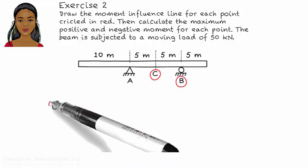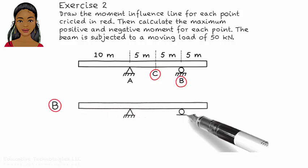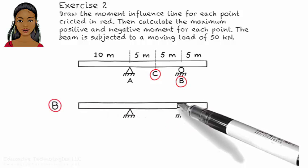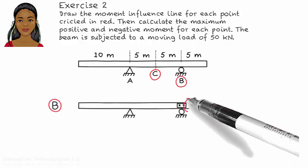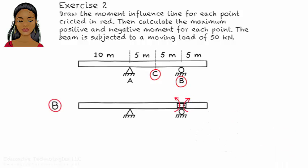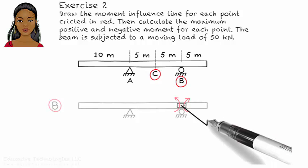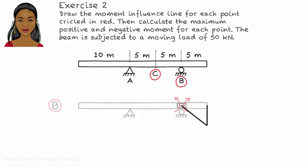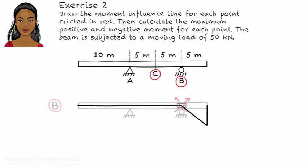Drawing the influence line for point B. Place a hinge at B and apply a positive moment to the hinge. The right segment of the beam turns clockwise but the left segment remains undeformed. According to the influence line, no positive moment develops at B.